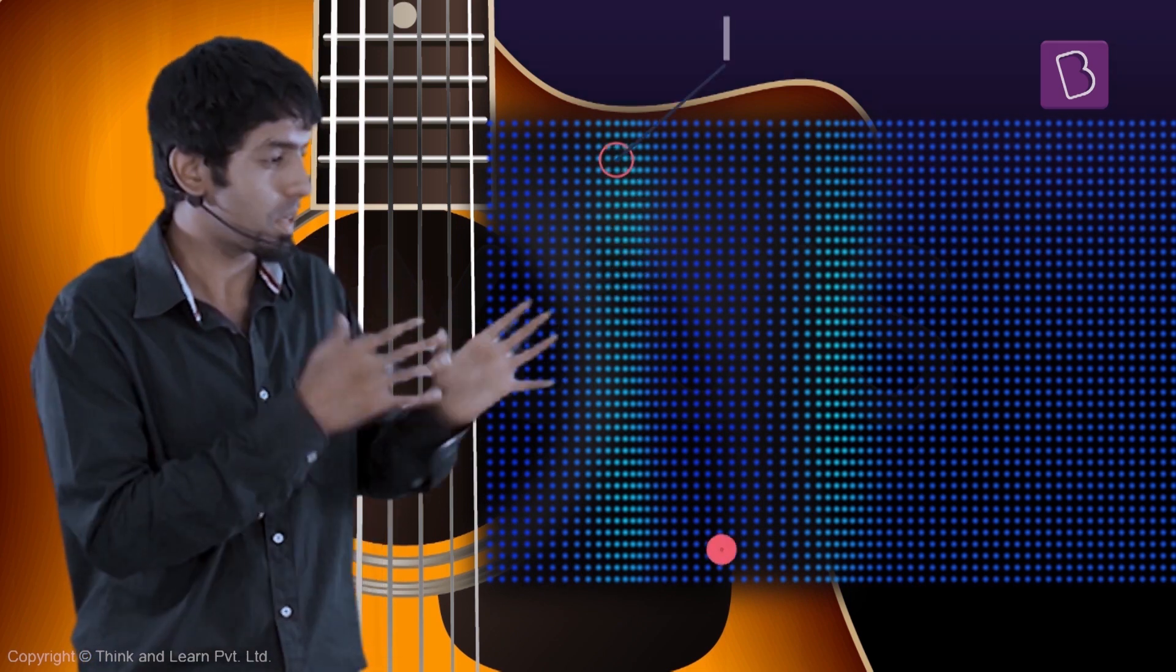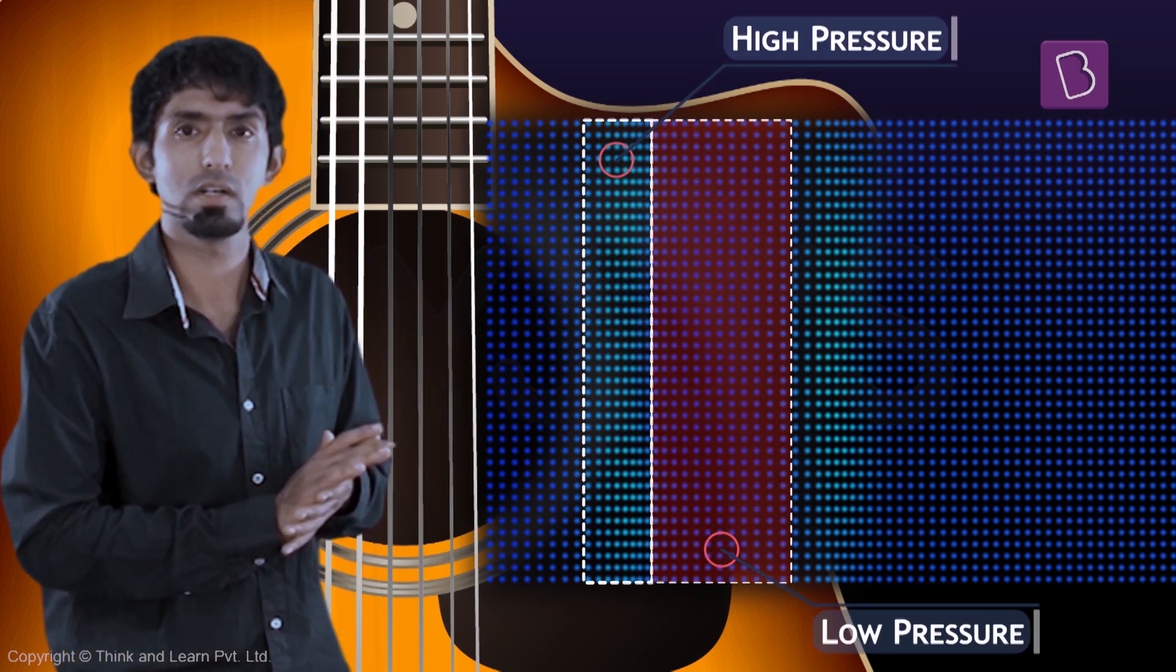So in one up and down, what the string has really done is compressed some air and then pulled back, keeping a little bit of air less for some time. So high pressure, low pressure. Now what is the string going to do again? It's going to create this again.